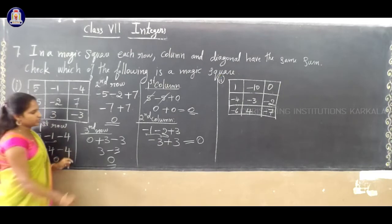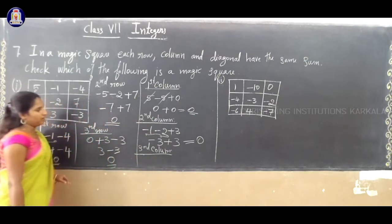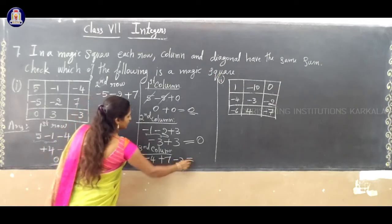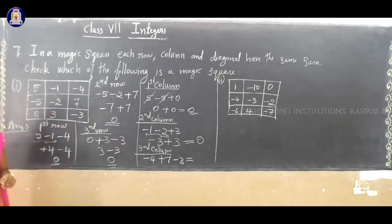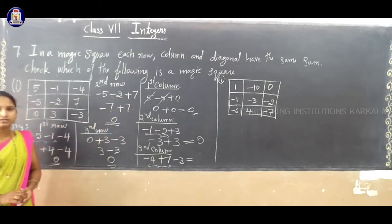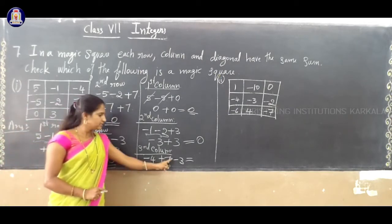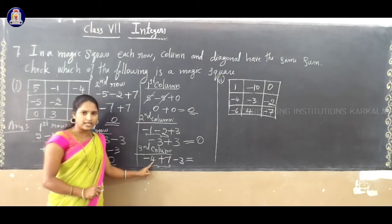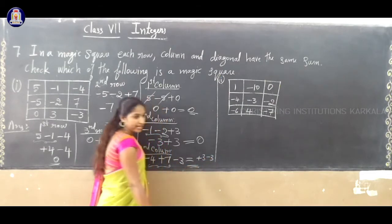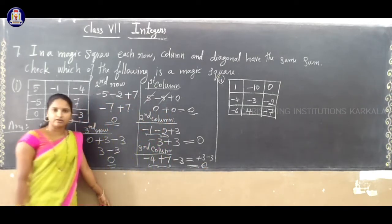Last column, third column: the numbers are minus 4, plus 7, minus 3. Minus 4 and plus 7 — different signs, subtraction — 7 minus 4 is 3, so plus 3. Then plus 3 minus 3 gives 0. So, the third column sum is 0.